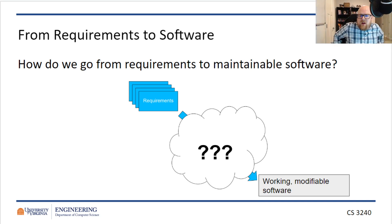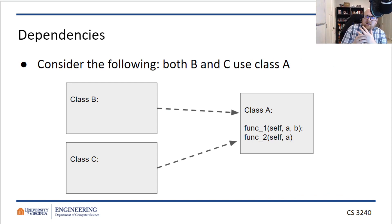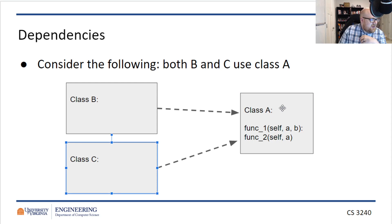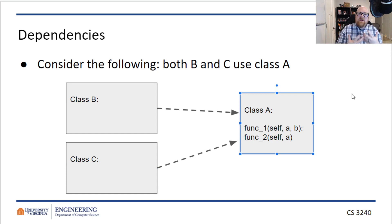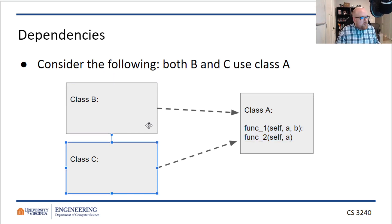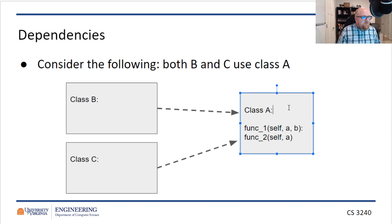What do I mean by modifiable? If we are constantly adding to the system, we may find that some additions necessitate change. Let's say we have two classes, class B and class C, which use some third class, class A. This is called a dependency. Because B uses A and C uses A, B depends on A and C depends on A. And what this means is that if class A has to change its interface — that is to say what functions it has available — that will necessitate changes to class B and C. The opposite is not true. If I need to make changes to class B, I don't necessarily need to change anything in class A.